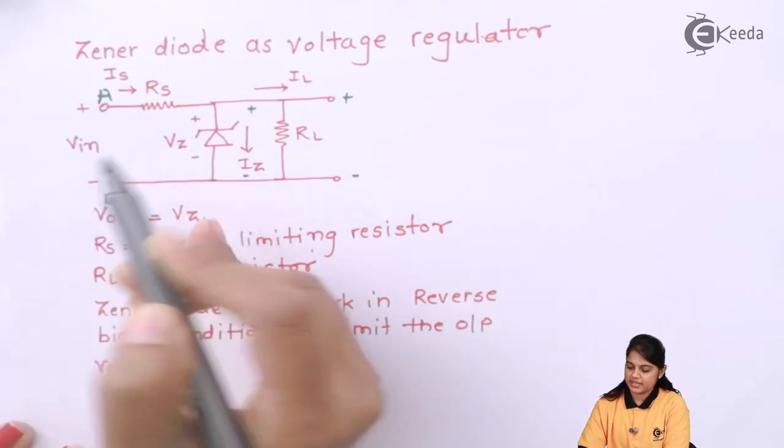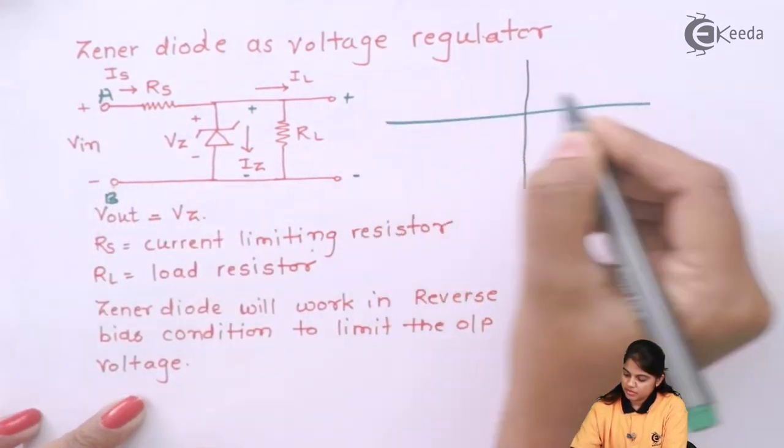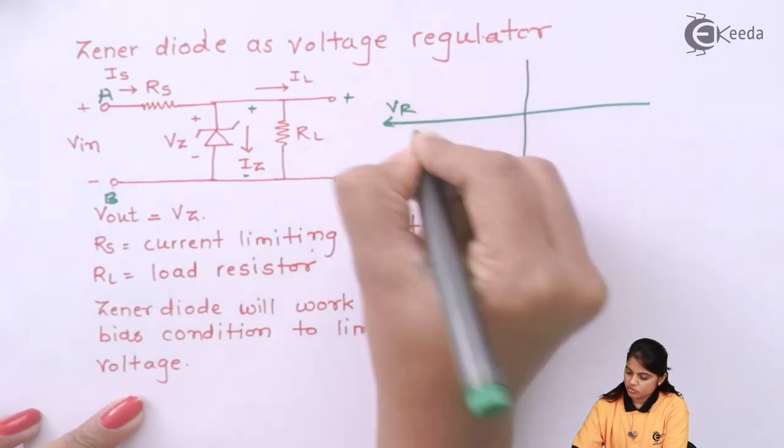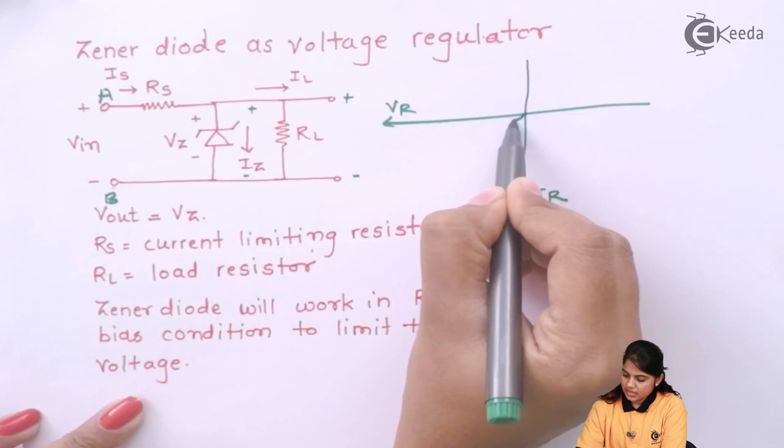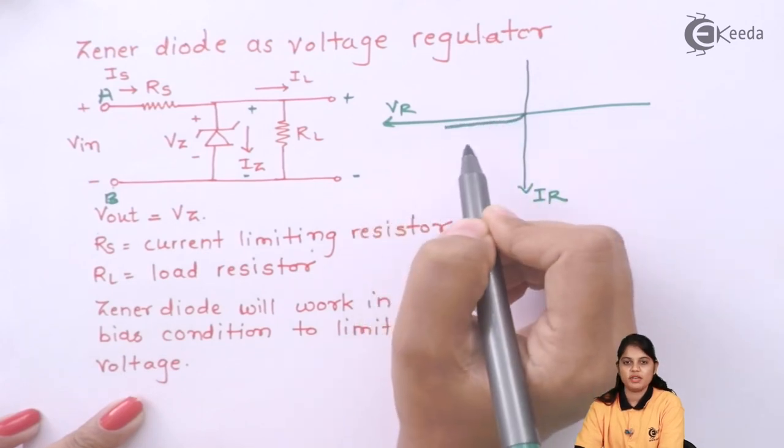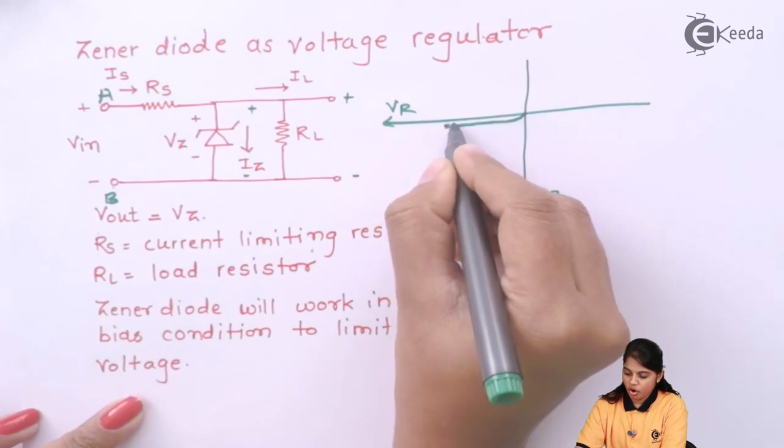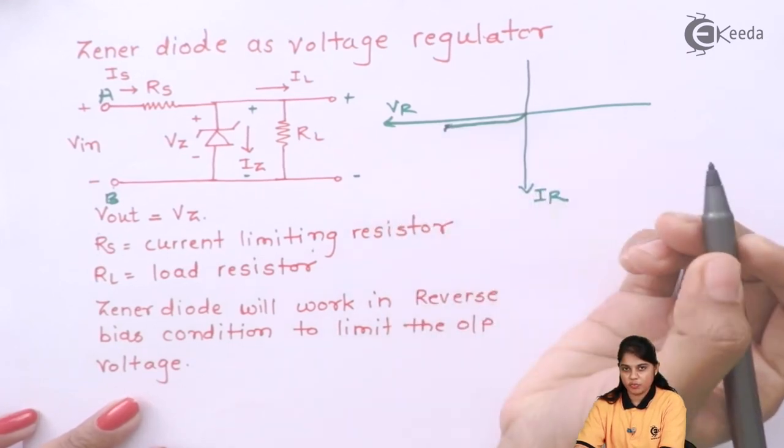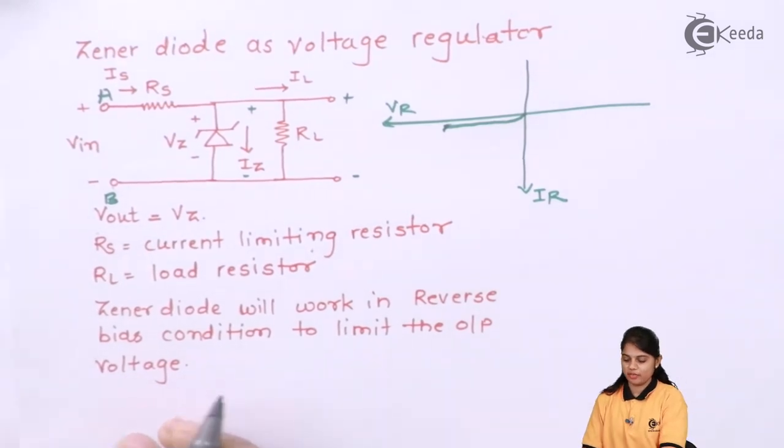If you go on increasing, I will draw here the reverse. This is my reverse voltage and this is my reverse current. If you keep on increasing, initially there will be small amount of current flow that will be the reverse leakage current. But at one point, when it crosses, for example 3V, because the reverse breakdown voltage given for the Zener diode is 3V to 200V.